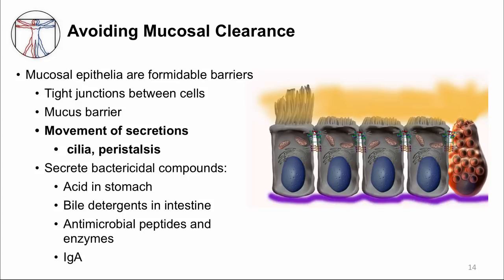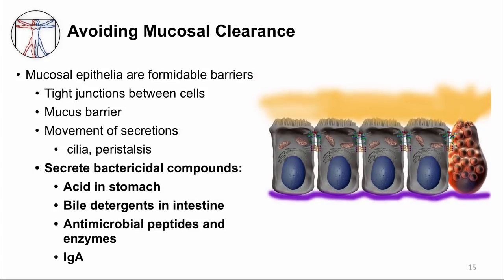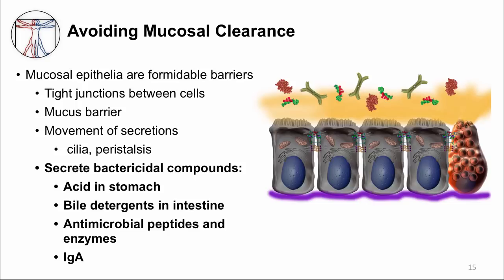Our bodies produce numerous microbicidal chemicals. The human stomach is a vat of acid that can reach a pH of 1 and destroy most microbes. This is followed by a shower of bile in the duodenum that functions as a detergent, stripping membranes off of organisms and enveloped viruses. Finally, there are specialized molecules secreted to injure microbes, such as antimicrobial peptides that poke holes in bacteria, lysozyme that digests the cell wall, and antibodies like secreted IgA or immunoglobulin A that specifically bind to microbial structures.